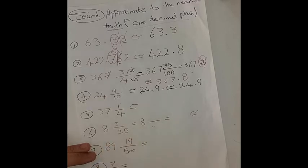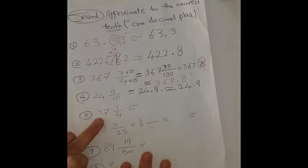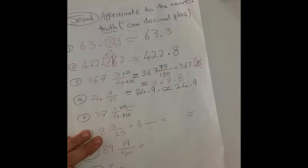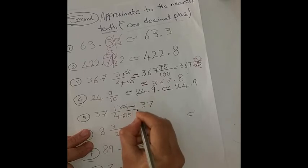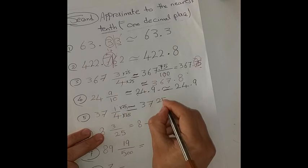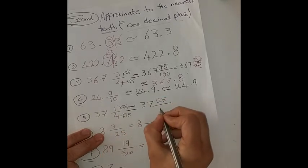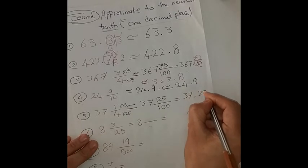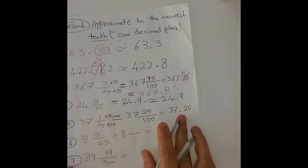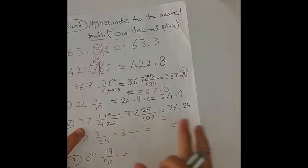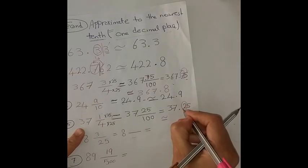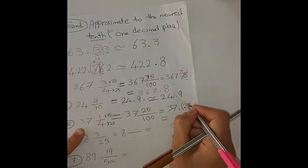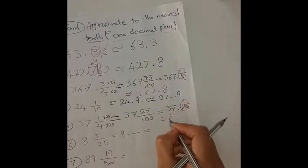Next: 37 and 1 over 4. I convert the mixed number to decimal by multiplying numerator and denominator by 25: 1 × 25 = 25 and 4 × 25 = 100, giving 37.25. I circle the tenth place and look at its neighbor, 5. Five is rich, so I cancel it and add 1 to the tenth place. The result is 37.3.